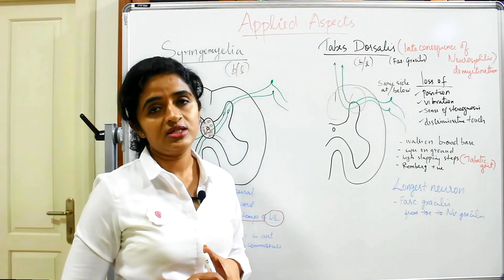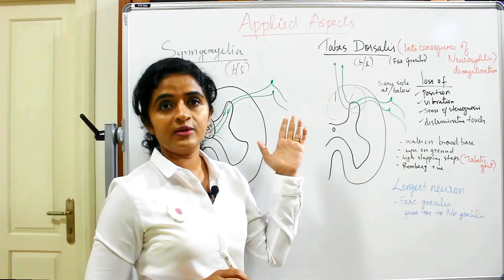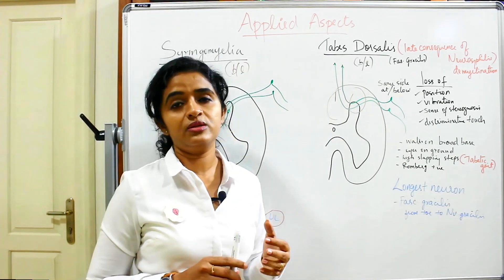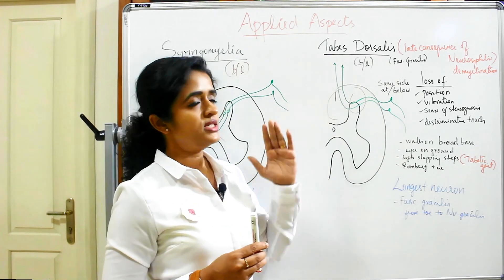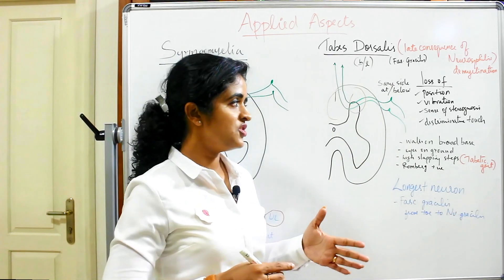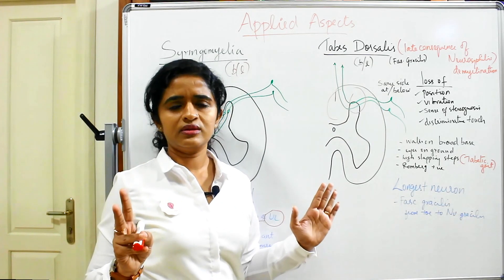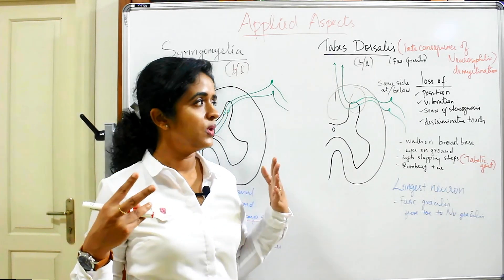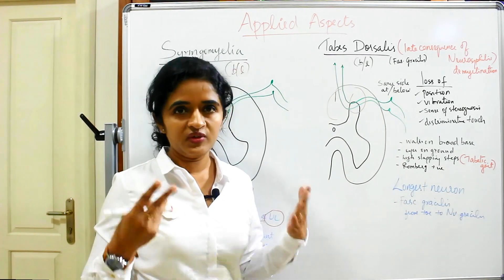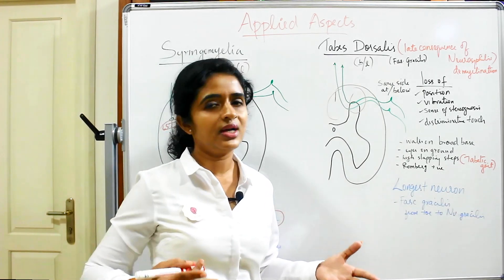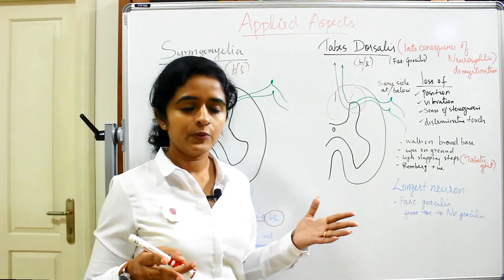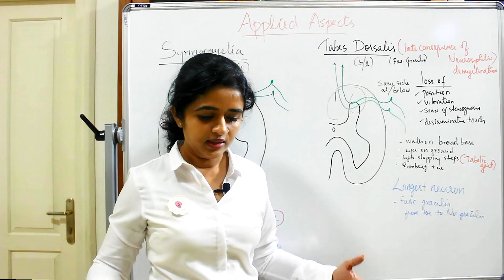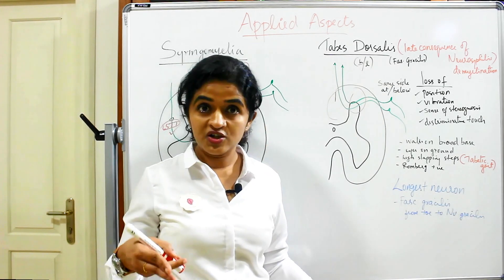Since the posterior column is affected, the sensations lost in tabes dorsalis include sense of position, sense of vibration, sense of stereognosis, and sense of two-point discrimination. The patient will walk with a broad-based gait. Because there is no sense of conscious proprioception, the patient cannot understand where he is, so he must continuously look at the ground with his eyes to know where he is placing his legs.